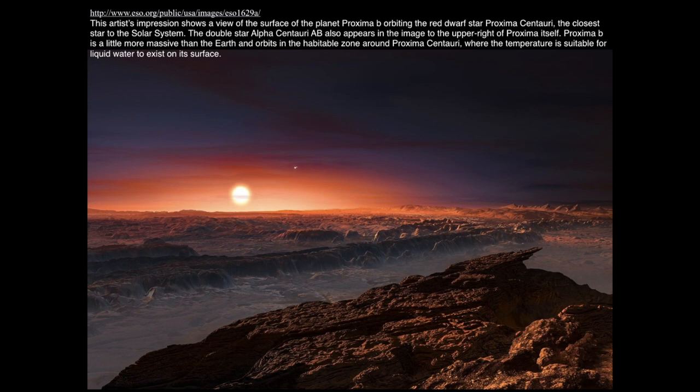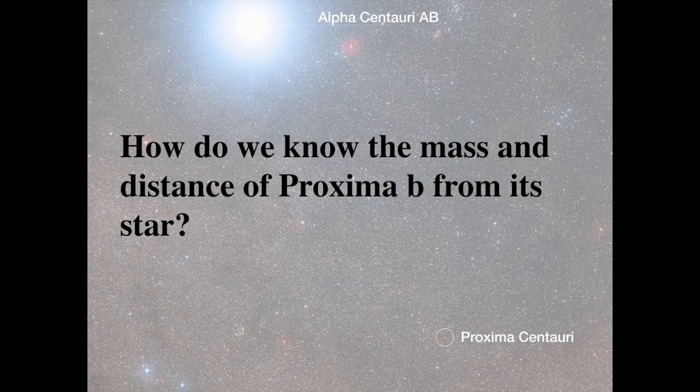By looking at binary stars — eclipsing binaries and spectroscopic binaries — we now know the masses of stars, how masses relate to brightness, and how masses relate to spectral type. We can also discover planets around other stars. How exactly we determine that mass we'll talk about next time. See you soon.